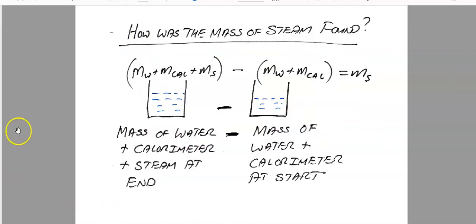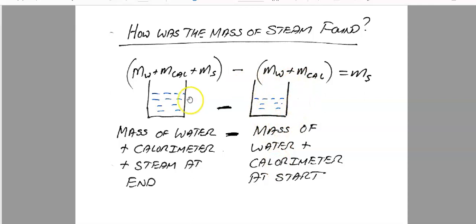Something I almost forgot — and it is often asked in Leaving Cert papers — is how the mass of the steam is found. That is very easy. You get the mass of the calorimeter and its contents at the end of the experiment — that's the mass of the water, the calorimeter, and the steam that was added to it. You then subtract the mass of the calorimeter and water at the start of the experiment. The extra mass at the end will clearly be the mass of the steam. Even writing that subtraction equation would get you full marks in the Leaving Cert.